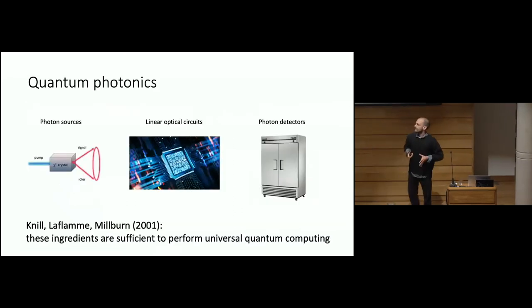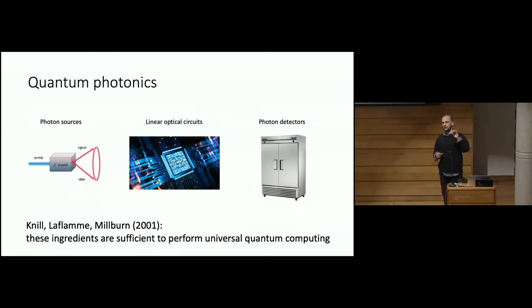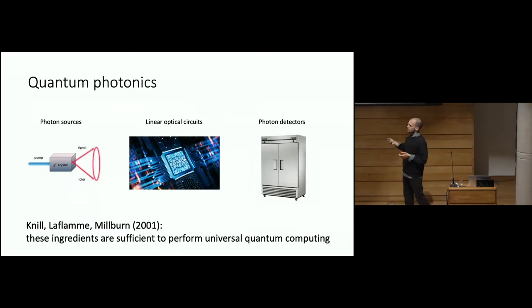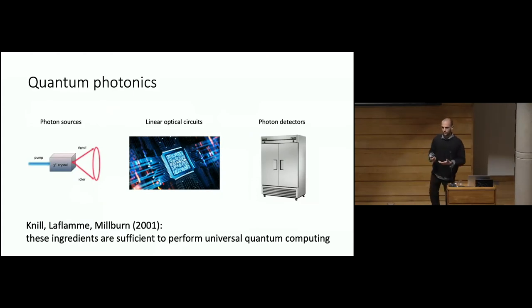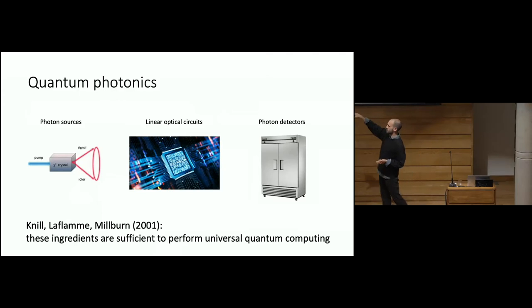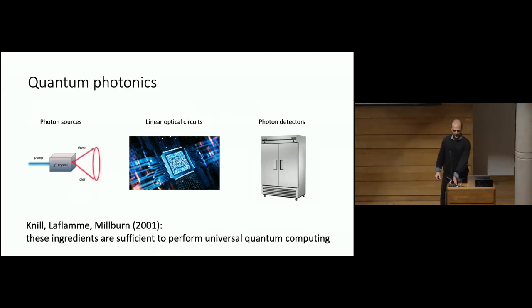The starting point of this work is a paper in 2001 from Knill, Laflamme, and Milburn, where they showed that there are three simple ingredients that you can fabricate in photonics to do universal quantum computing. These ingredients are photon sources,